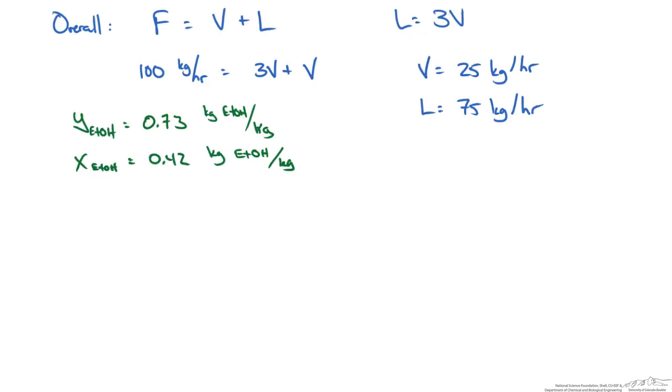An ethanol balance says that some amount and we typically will use z for the feed to indicate our mass or mole fraction times 100 kg an hour for our feed is going to be equal to 0.73 kg of ethanol per kg times our vapor flow rate which we said was 25 kg an hour.